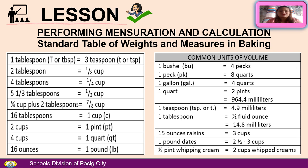Common units of volume: 1 bushel equals 4 pecks. 1 peck equals 8 quarts. 1 gallon equals 4 quarts. 1 quart equals 2 pints and equals 964.4 milliliters. 1 teaspoon equals 4.9 milliliters. 1 tablespoon equals 1/2 fluid ounce and equals 14.8 milliliters. 15 ounces of raisins equals 3 cups. 1 pound of dates equals 2½ to 3 cups. And 1½ pints of whipping cream equals 2 cups of whipped cream.